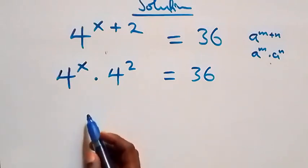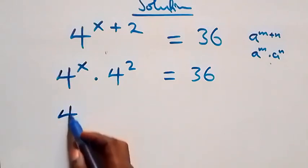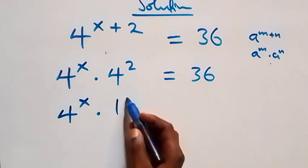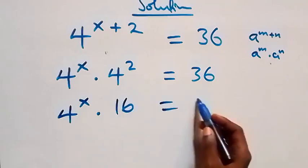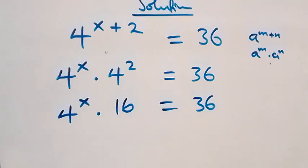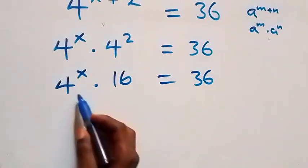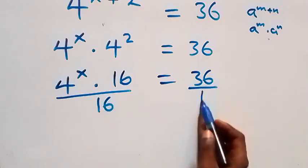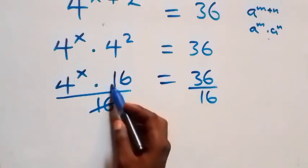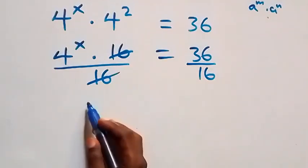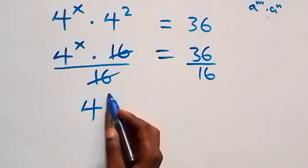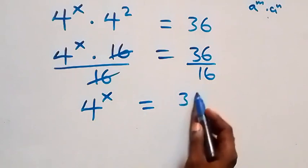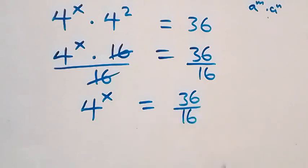Here we have 4 raised to power x times 4 squared, which is the same as 16, equals 36. From here we divide both sides by 16 — divide here by 16 and also divide this side by 16. The 16s cancel each other, and we have 4 raised to power x left, which equals 36 over 16.